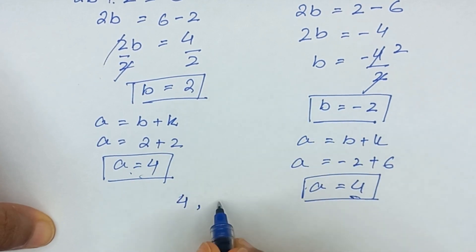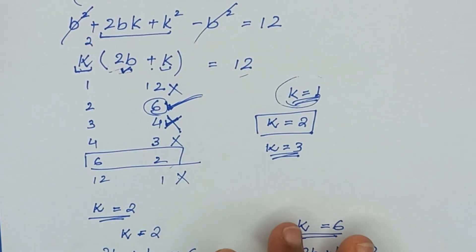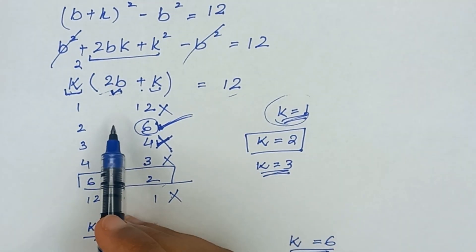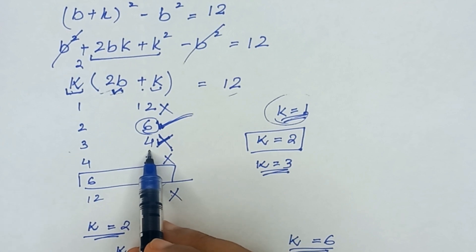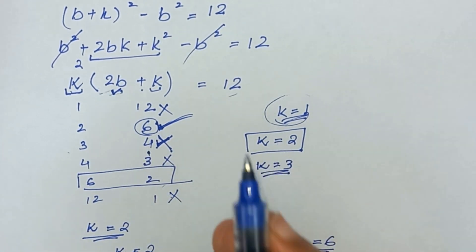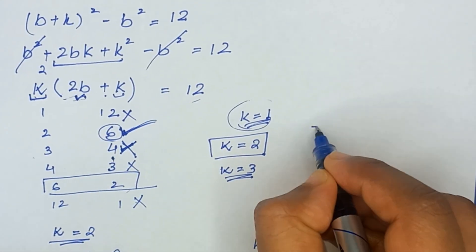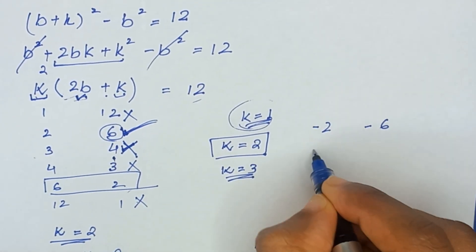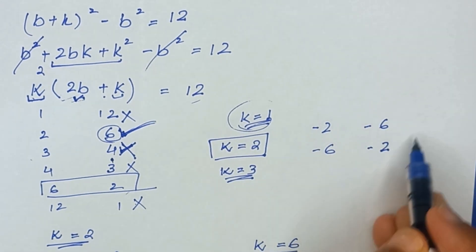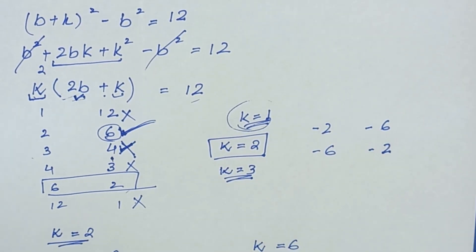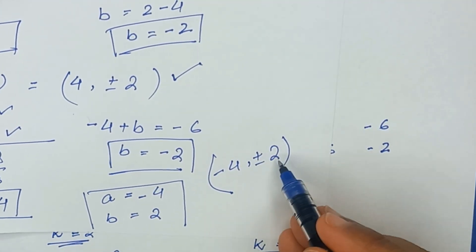Similarly, when we take the negative factors — minus 1 and minus 12, minus 2 and minus 6, minus 3 and minus 4 — we again take only those pairs where both factors are even: minus 2 and minus 6, and minus 6 and minus 2. Solving these gives a equals minus 4 and b equals ±2, matching the results from Method 1.